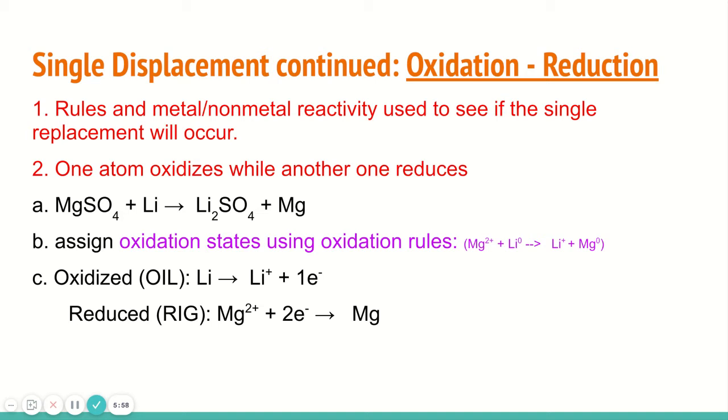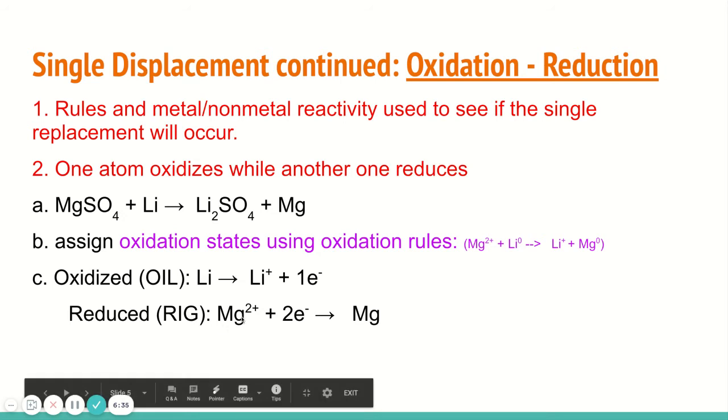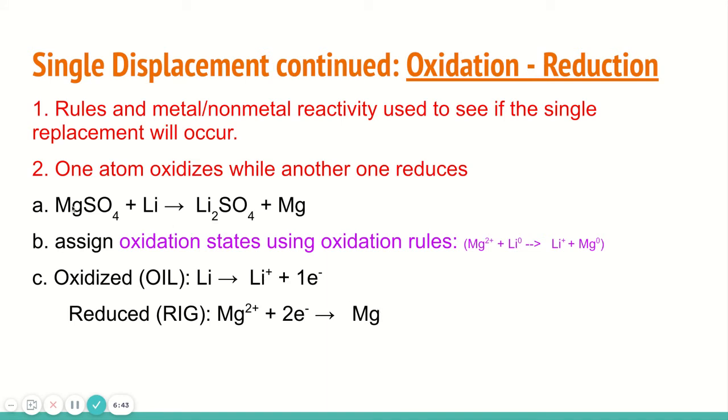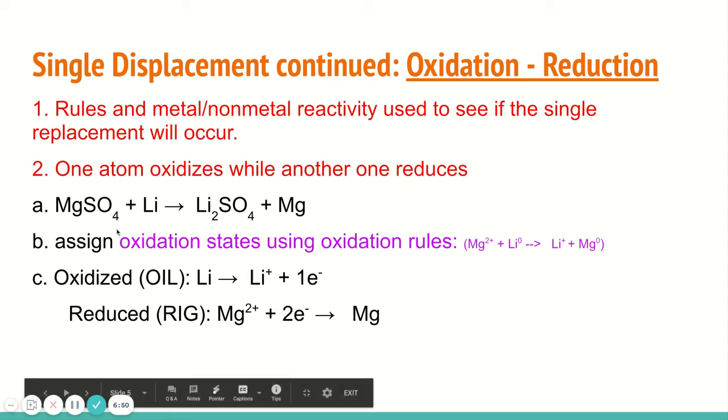What happens there is we have these half reactions. We have magnesium going from positive two to zero, and we have lithium going from zero to positive two. Their oxidation states are changing because electrons are being given and taken. These are the oxidation and reduction half reactions. These little acronyms here help you remember which is which. Oxidation is losing, that's what OIL stands for. You can see lithium going from a zero oxidation state to a plus one oxidation state is losing one electron. When you're getting more positive, you're losing electrons because electrons are negative.